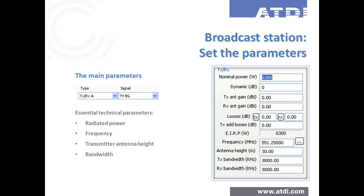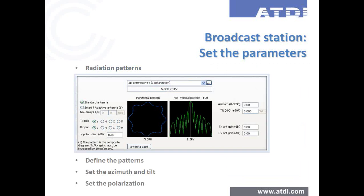In ICS Telecom you can define a network consisting of stations. You have access to general information which can be entered manually or imported from ASCII files, CSV files, or databases for large quantities of data, including radiated power, frequency, antennas, height, bandwidth, and so on. A signal technology is assigned to the station, and the next step consists of defining radiation patterns. You can define vertical patterns that can be imported from various formats or selected from libraries, and set azimuth, tilt, polarization, and so on.